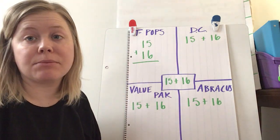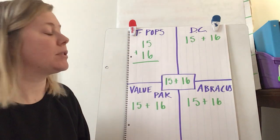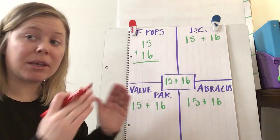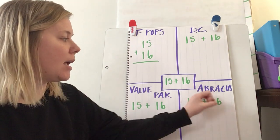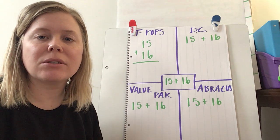So let's do a quick review of our characters. First off, we have T-Pops, traditional. Then we have DC, decomposing, value pack, where they break out into place value, and abracus, where we zap the numbers. He's the magician and he changes the numbers.